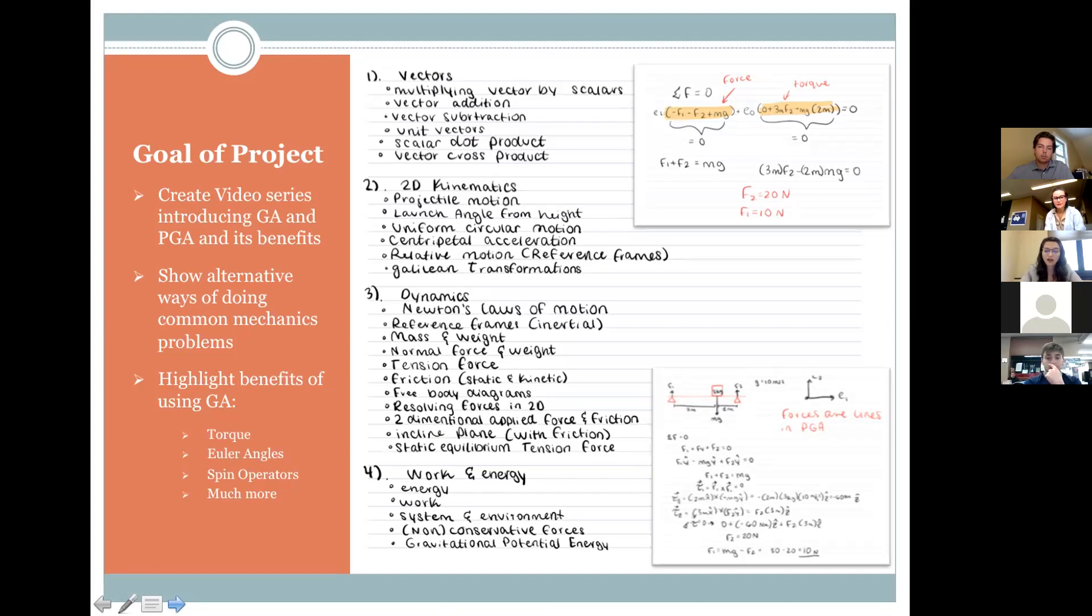Not only does geometric algebra help to unify different areas of math, it also simplifies some parts of math as well. One example is in geometric algebra, forces and torques become the same geometric object. And it turns out a lot of conceptual clarity is brought to this topic because it's actually clear what torque is, while it's still kind of unclear the way physics is taught to an introductory physics student.